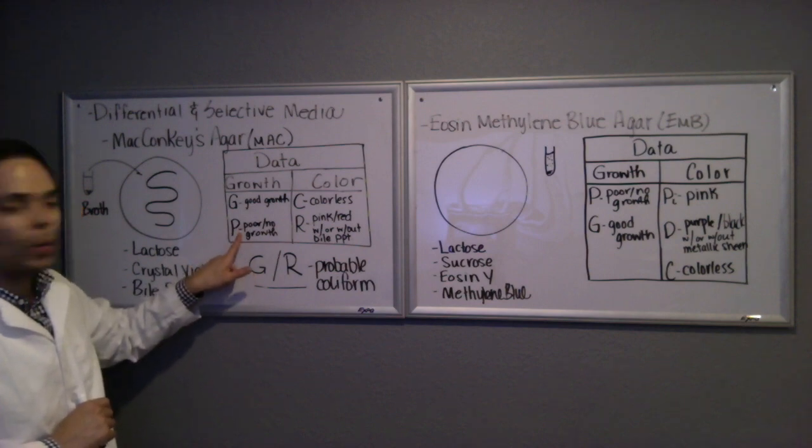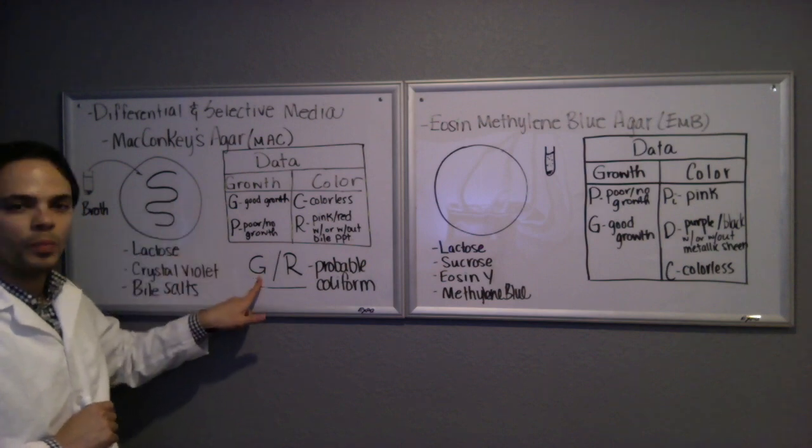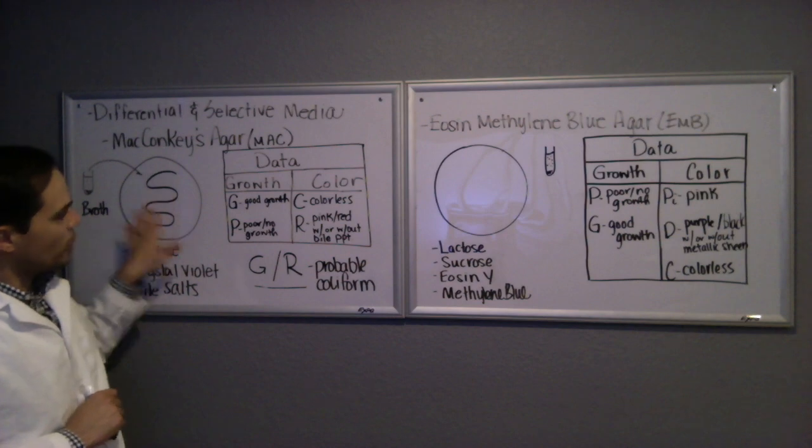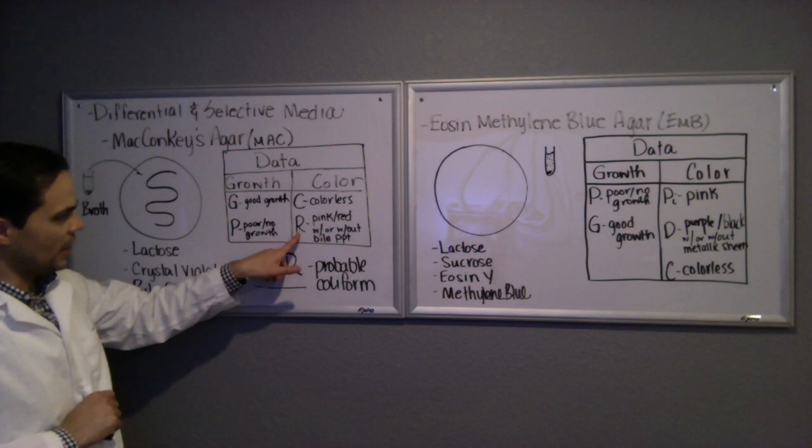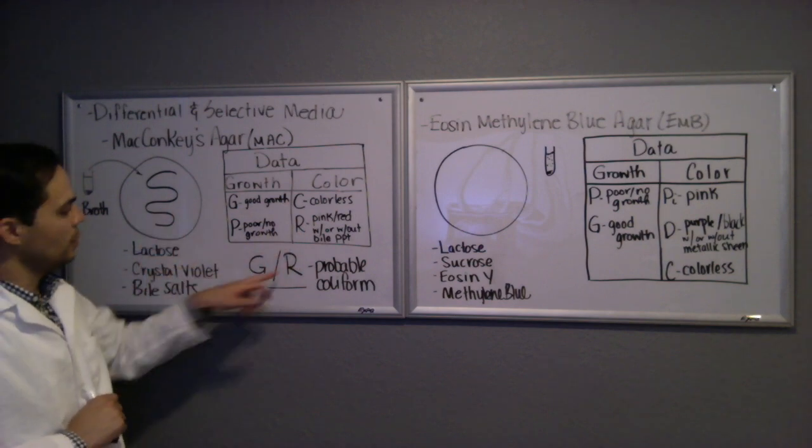If it were to grow poorly or not at all, that would be a P. But let's say ours grew really well, so we put a capital G there for good growth. Then we look at the color of the growth. If the color of the growth itself is pink or red, then we put an R. So let's say ours was red, we put an R.